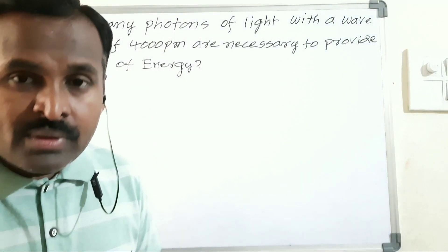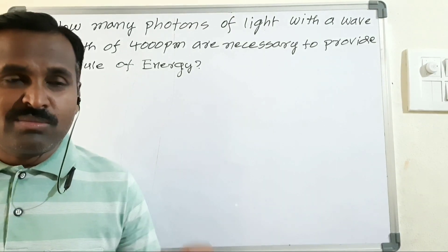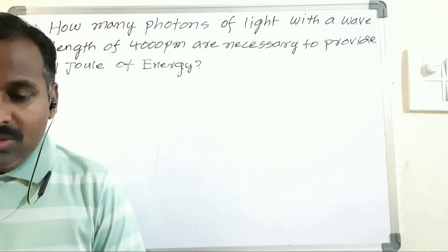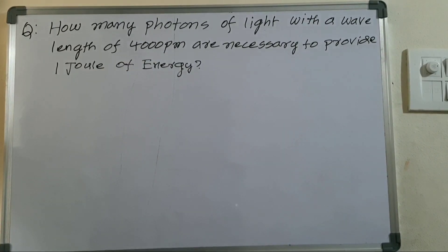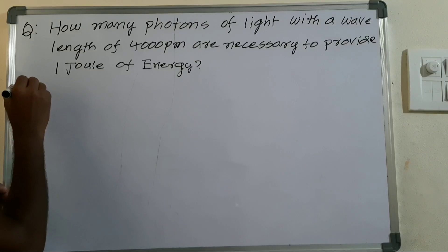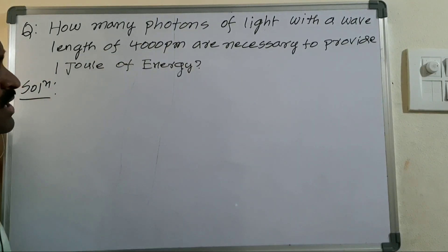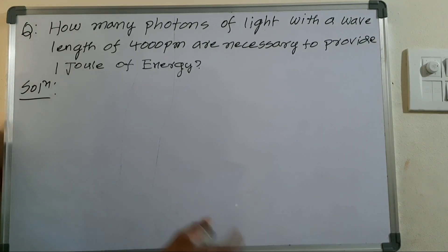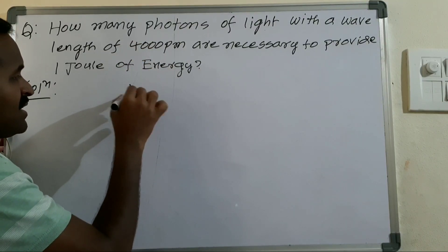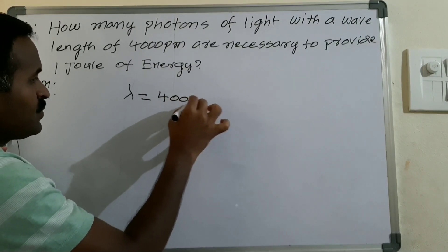Good morning to one and all, I'm Ben Katesham. I'm going to discuss some problems in the atomic structure topic. The first question: how many photons of light with a wavelength of 4000 picometers are necessary to provide one joule of energy? The wavelength is given as 4000 picometers.